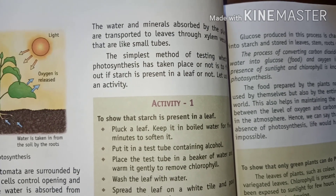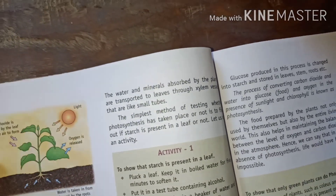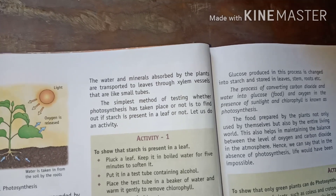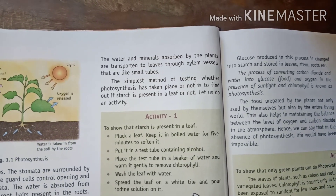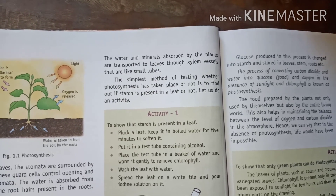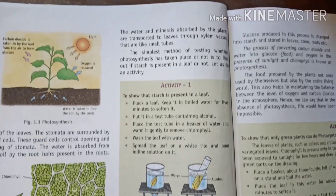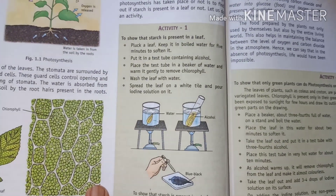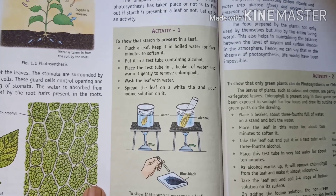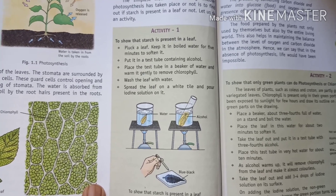The simplest method of testing whether photosynthesis has taken place or not is to find out if starch is present in a leaf or not. Let us do an activity. The test for starch is as follows: pluck a leaf and put it in water for 5 minutes to soften it.